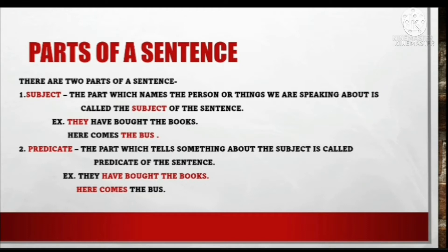Second part of sentence — predicate. The part which tells something about the subject is called the predicate of the sentence. Waakye mein agar hum subject ke baare mein kuch keh rahe hain, to us part ko waakye ka predicate part kehte hain. For example: they have bought the books. Pahle bhi is example ko hum dekh chuke hain subject mein, lekin aapko behtar samjhane ke liye maine phir se is waakye ko repeat kiya hai. Yahaan 'they' subject hai. Lekin kya baat ho rahi hai unke baare mein? 'Have bought the books' — to 'have bought the books' predicate part ho gaya.